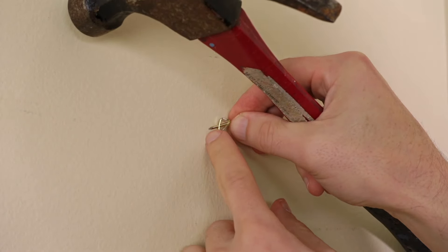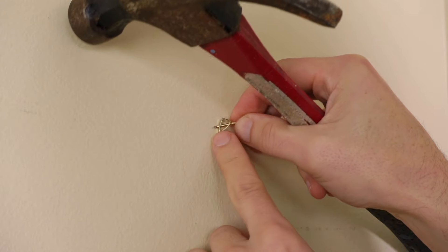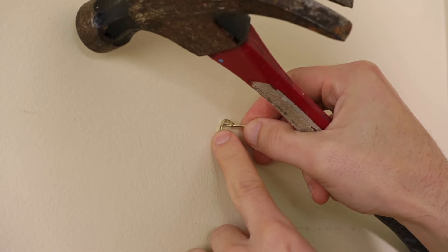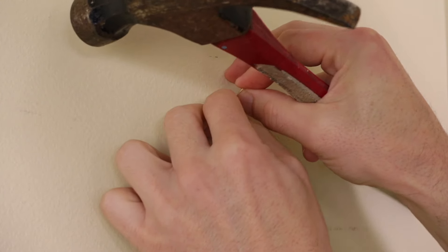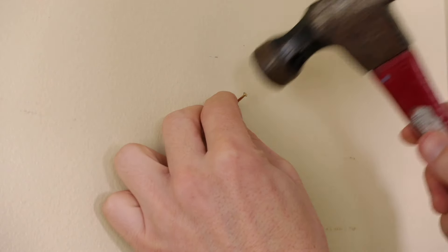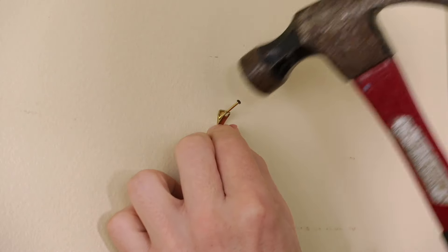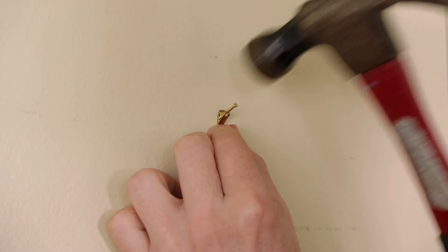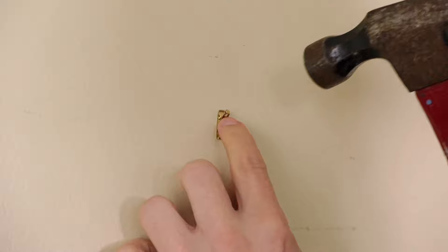So you want to make sure that the point of the nail is going through this hole. That it's not on the plate or otherwise you're going to be trying to pound through metal. So you just start by tapping it. And then you can just hold on to the hanger and drive it all the way in. That's pretty sturdy.